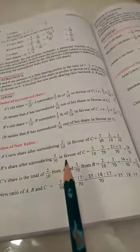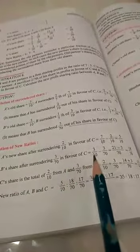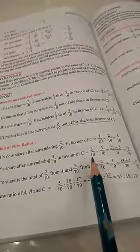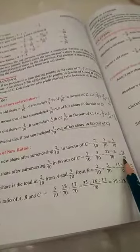B's share after surrendering 3/70 in favor of C. B's share was earlier, the old share of B was 3/10. 3/70 surrenders to C. So the share left with B is 18/70.